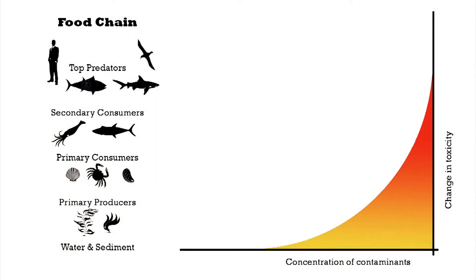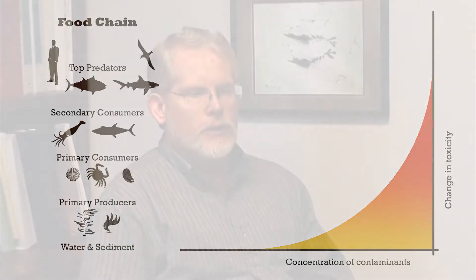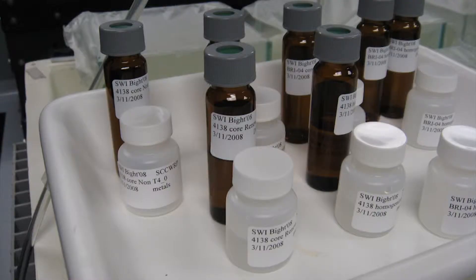Not just to the animals living in the sediments, but also to fish and wildlife and even humans that are further up in the food chain. The challenge is that we just can't measure the chemical contamination levels in those sediments to figure out their quality, because most of the contaminants are really tightly bound onto the sediments and they're not able to cause exposure to the animals.